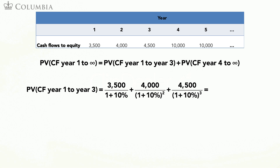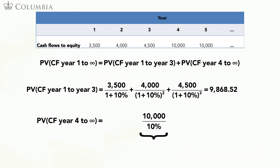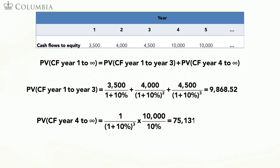Applying the present value formula to the first three cash flows, we obtain a present value of $9,868.52. To compute the present value of the perpetuity that starts in year four, we first pretend that we are standing in year three. From this viewpoint, the perpetuity starts next year, and we can apply the perpetuity formula and obtain a value of $100,000. Recall that this value is as of year three. Discounting this value three years to year zero leads to a value of $75,131.48.